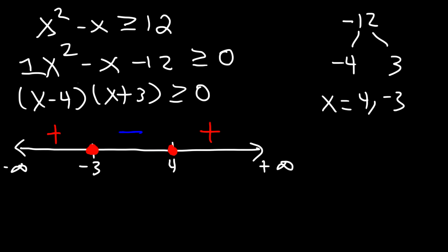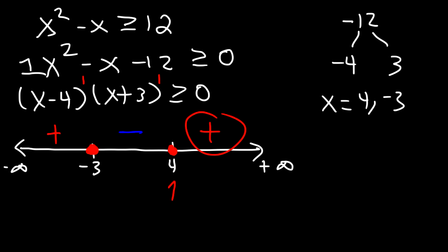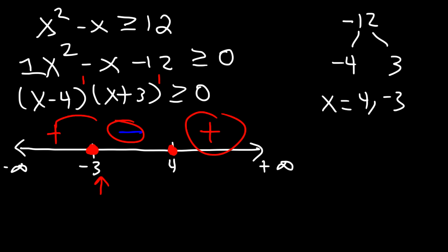Notice that the multiplicity of the zero at 4 is 1, and the multiplicity of the zero at negative 3 is also 1. Whenever the multiplicity is odd, the sign will change at that point. So if you know the first sign, you can determine the rest — here the sign switches from positive to negative at 4, and from negative to positive at negative 3. If the multiplicity were even, the sign would not change.